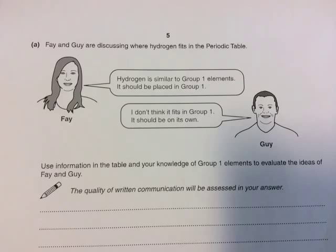Now you need to evaluate the view that hydrogen does fit into Group 1 — in other words, how is it similar to a Group 1 element? Hydrogen does fit because it has the same number of electrons in its outer shell: one electron. It forms an ion with a 1 plus charge when it loses that electron. It can form a chloride with the halogens, for example hydrogen chloride, similar to sodium chloride. It's very flammable, very reactive, and it reacts with halogens. So it is similar in several ways to Group 1 elements.